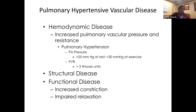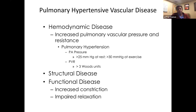Those of us in the field are trying to move away from saying 'pulmonary hypertension' and instead use 'pulmonary vascular disease' or 'pulmonary hypertensive vascular disease.' This is both a structural disease involving vascular remodeling and a functional disease — these blood vessels have a tremendous propensity to constrict with stimuli such as hypoxia or agitation with endogenous catecholamines, and have an impaired ability to relax to certain drugs and flow.